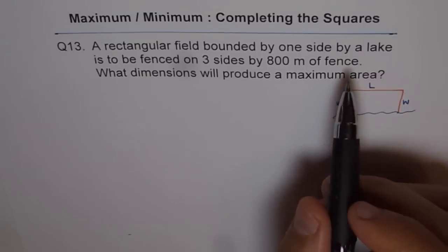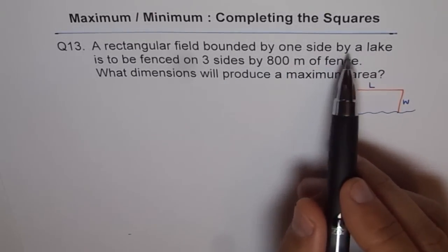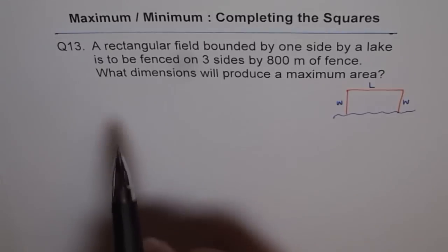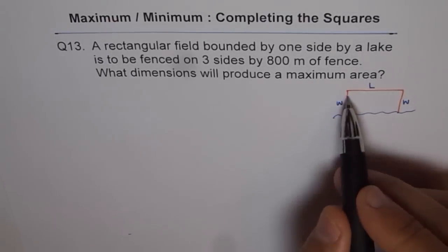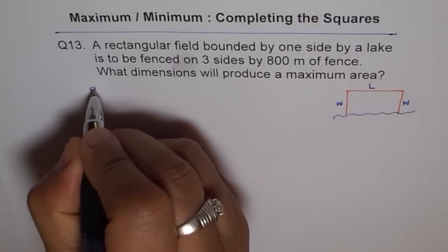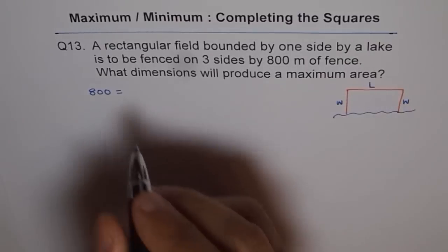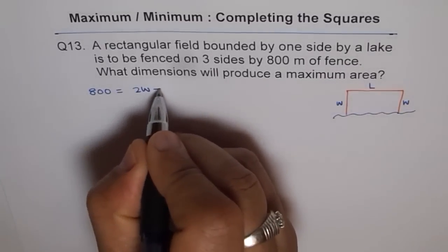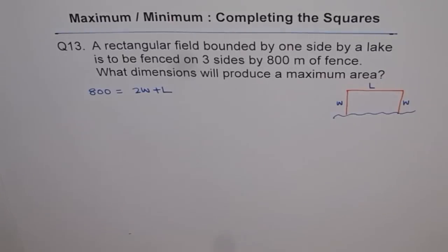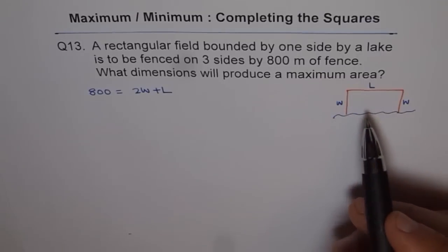Now what is given to us? Rectangular field bounded by one side by a lake, so we are not bounding that side, is to be fenced on three sides, these are the three sides by 800 meter fence. That means 800 is equal to W plus L plus W or 2W plus L.